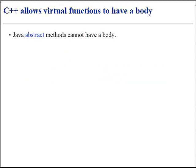Java abstract methods cannot have a body. C++ allows virtual functions to have a body. This is so that even though they can be overwritten, they can still provide base class functionality.